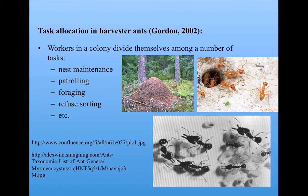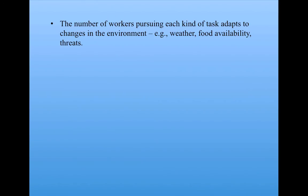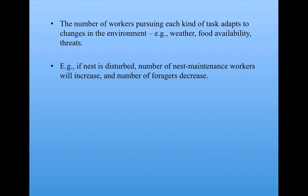The question is: how is it that, at any given time, ants decide what task they should be doing? It turns out that ants actually switch tasks according to what's going on in their environment. The number of workers pursuing each kind of task adapts to changes in the environment due to weather, food availability, predators, and so on. For example, Gordon showed that if the nest is disturbed, the number of nest maintenance workers will increase and the number of foragers will decrease.